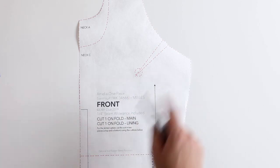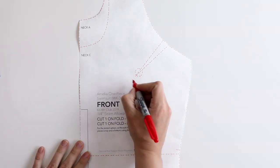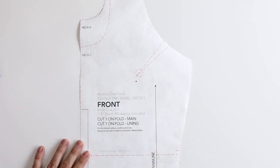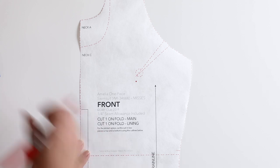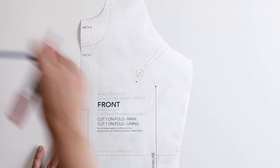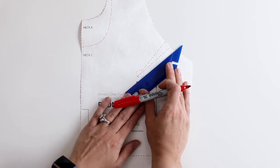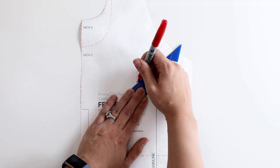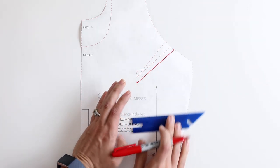The first thing we are going to do is mark up the pattern. So I am going to make a line about a centimeter below the tip of my arm side dart here. And then I am going to draw line A parallel to my dart up into the arm side.